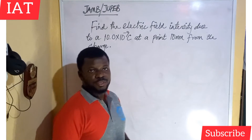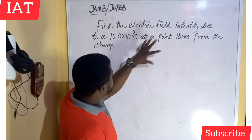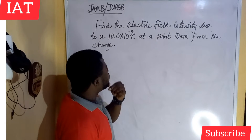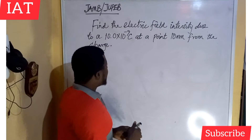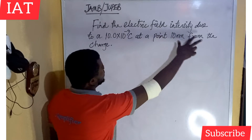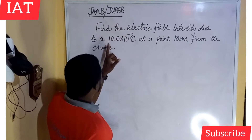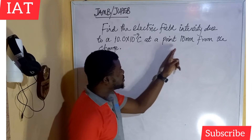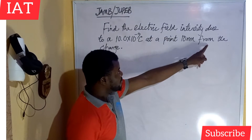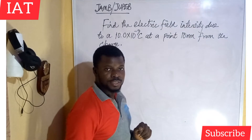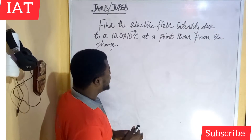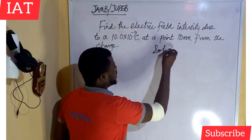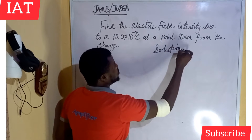Hello and welcome to instructor lesson online tutorials. Shortly we're going to solve this problem on electricity. We are asked to find the electric field intensity due to a 10.0 times 10 to the power of minus nine coulombs at a point 10 millimeters from the charge. It is a very simple problem.